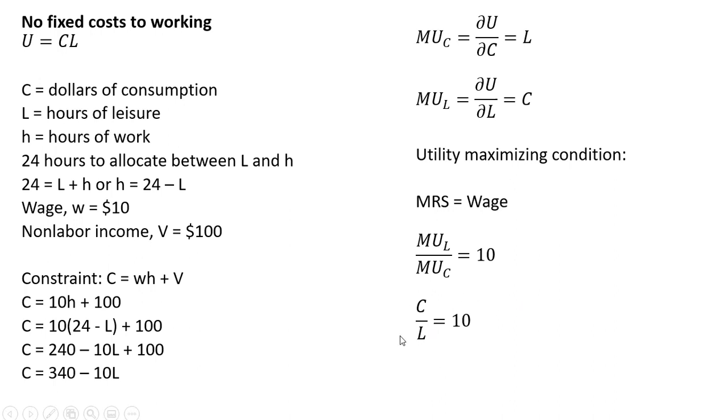And now we're going to solve this expression for C. Multiplying both sides through by L, C equals 10L. So basically, we're going to have two equations and two unknowns. We've got two C equations, so we're just going to set them equal to one another.